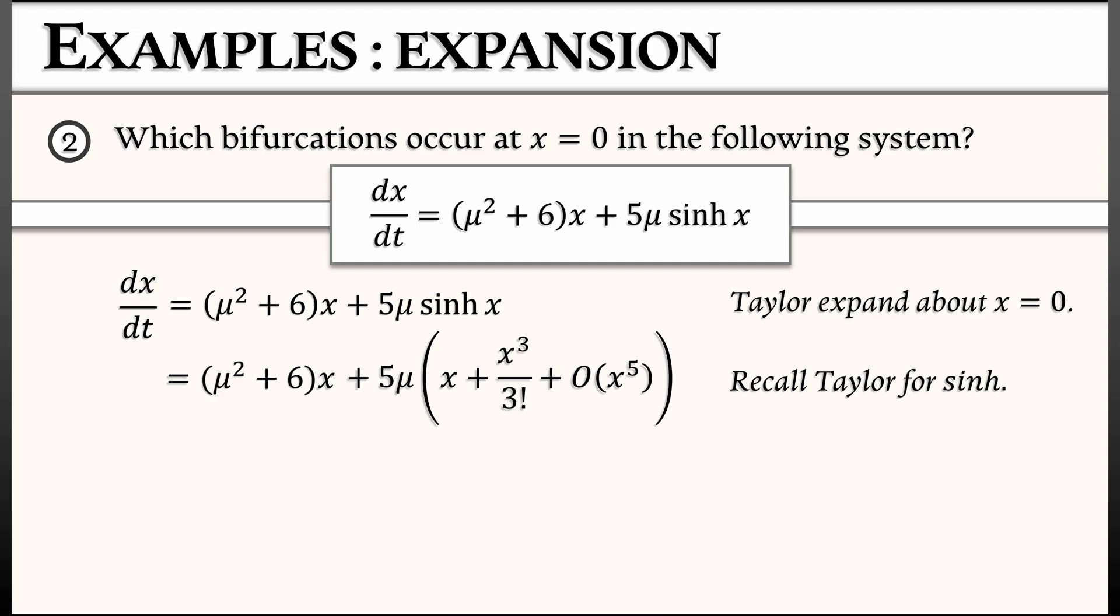Okay, now combining terms together according to the order of x, what do I get? I get quantity mu squared plus 5 mu plus 6 times x. That's the linear term plus a cubic term 5 mu over 6 times x cubed. Everything else is of order x to the fifth and higher.